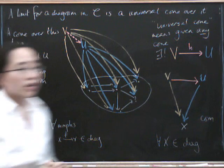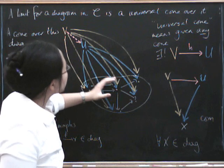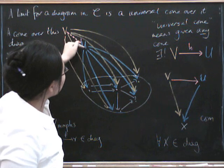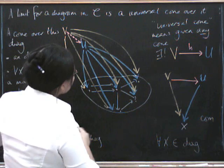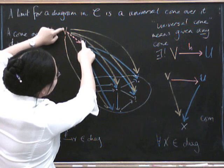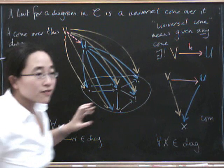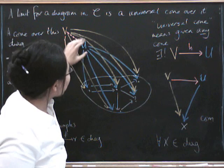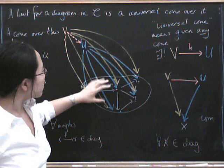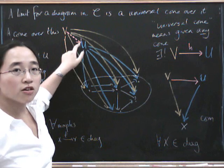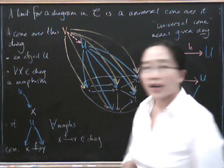So let's go over this one more time. A limit for a diagram is a cone such that, given any other cone, there is a unique factorization. 'Cone' means all the projection triangles commute. 'Factorization' means the triangles involving H and two different projections commute. The idea is that the vertex U somehow captures the entirety of this diagram — you get what you need to know about the diagram from knowing about U. Next time we'll see how the examples of limits we've had before are, in fact, examples of these universal cones.